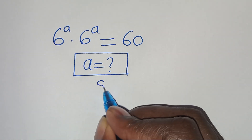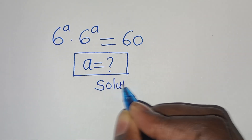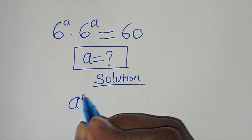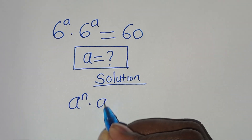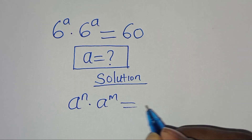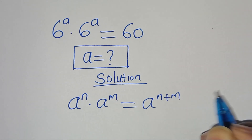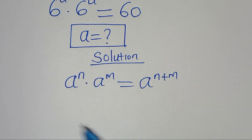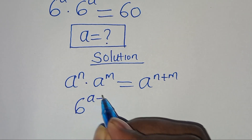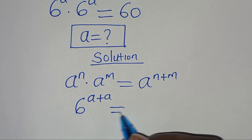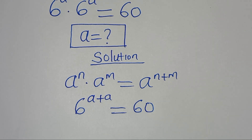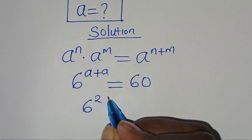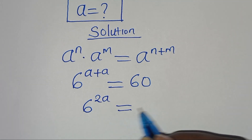Now let's provide a solution from here. This exponential equation is in the form of a to the power of n times a to the power of m, which we can express as a to the power of n plus m. Now, applying this exponential property, we have 6 to the power of a plus a, which is equal to 60. This means that we have 6 to the power of 2a, equal to 60.